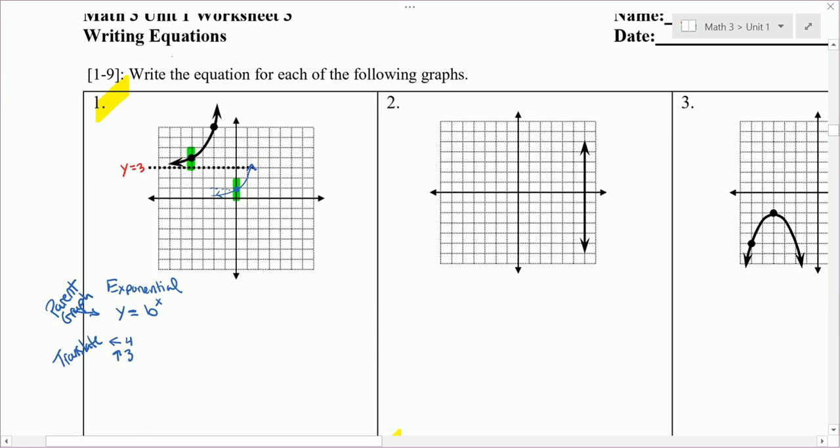By incorporating that translation, I'm now going to rewrite a general equation incorporating that translation. So y equals b to the x plus 4 plus 3. We don't know what b is yet, but the x plus 4 moves it to the left 4, and the plus 3 that's not in the exponent moves it up 3.